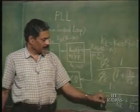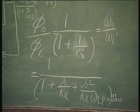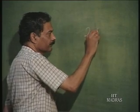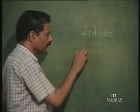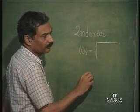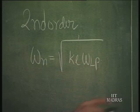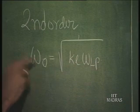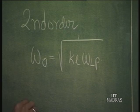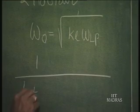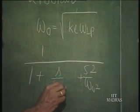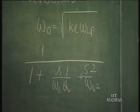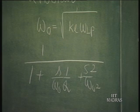The denominator becomes 1 plus S/K_L plus S² over (K_L times omega_Lp). So the phase locked loop is a second order system with natural frequency equal to the root of K_L times omega_Lp. We write the natural frequency as omega_naught, and we can write this as 1 over (1 plus S² over omega_naught² plus S over (omega_naught times Q)), the normal form of a second order system.